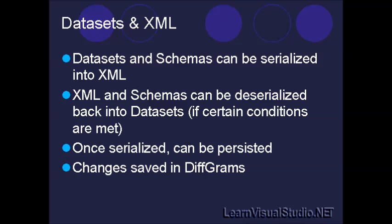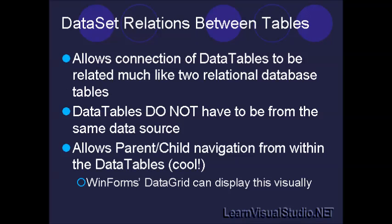Data sets and schemas can be serialized into XML, and XML and schemas can then be deserialized back into data sets if they're in the right form. Once the data set is serialized into XML, it can be persisted to disk or sent via web service. Any changes that you make within a data set are represented in XML as diffgrams. Diffgrams are the to-do list kept by the data set to remember: I need to insert a row, update a row, delete a row. It keeps all the original values plus all the new values, and that's what the data adapter uses — that list of diffgrams — to coordinate the resolution of changes back into the original data source.